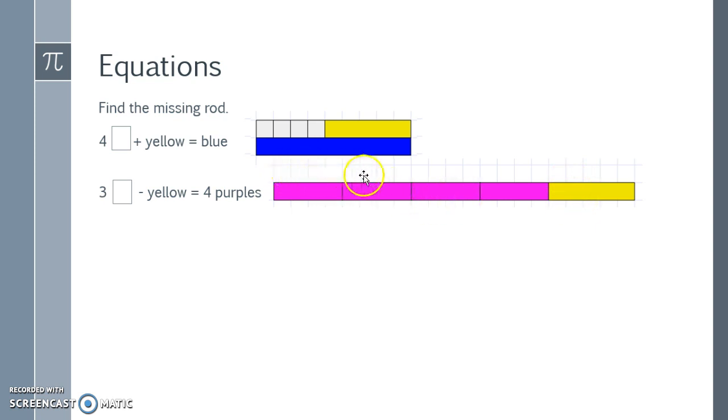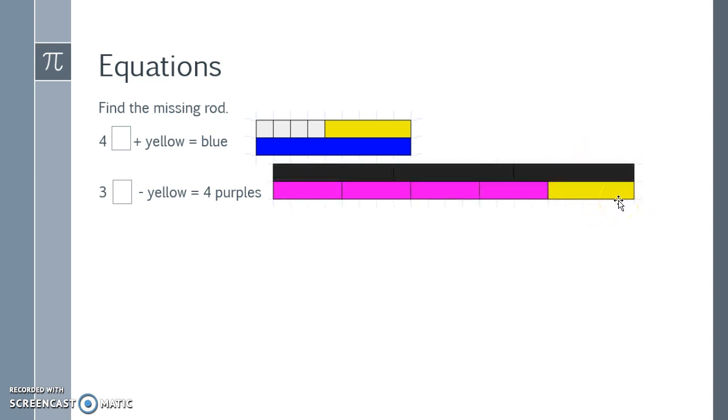So I want to see what will take up this whole space so that when I take away the yellow part, I end up with four purples. I see that I have seven blacks that make up four purples and a yellow.